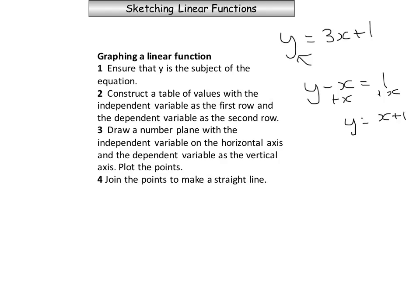The second step is to construct a table of values with the independent variable as the first row and the dependent variable as the second row. It's really important that the independent variable — which is our x value — is the first row, and the dependent variable — our y value — is the second row. This is always the case.